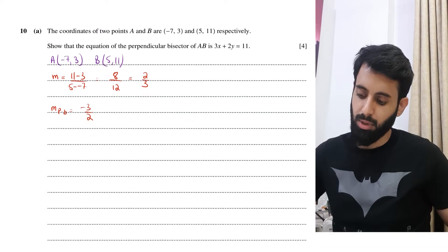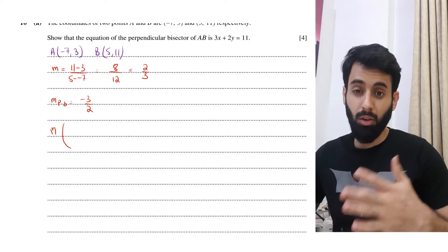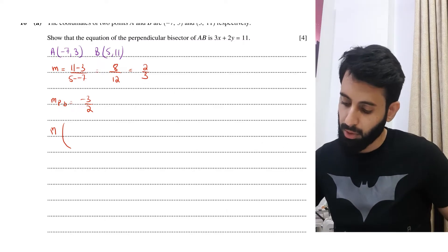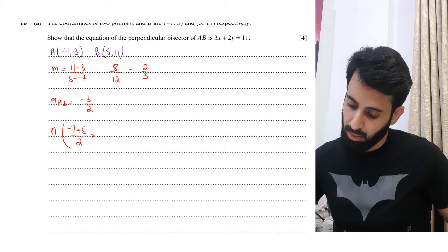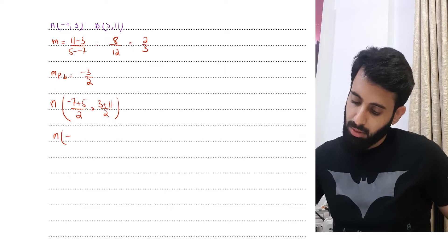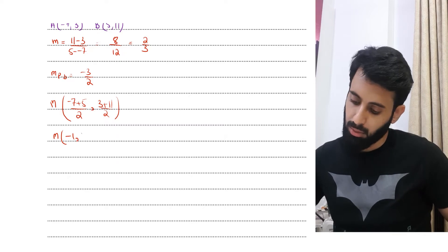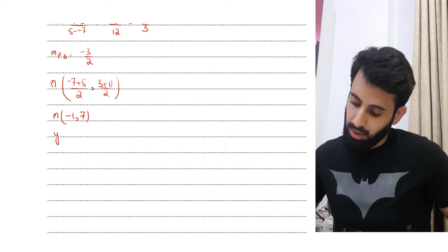Since the perpendicular bisector passes through the midpoint of AB, we need to find the midpoint: ((-7 + 5)/2, (3 + 11)/2) = (-2/2, 14/2) = (-1, 7). Now we have both the gradient and the point.